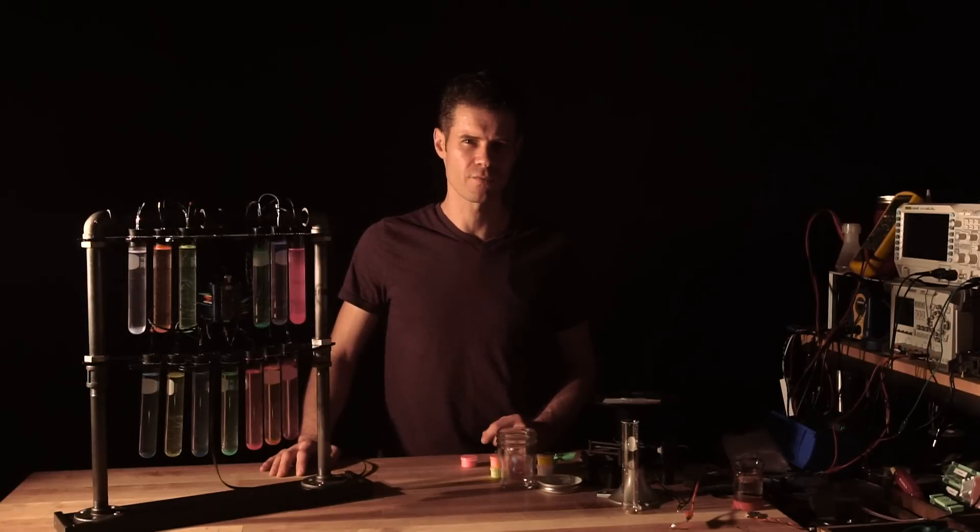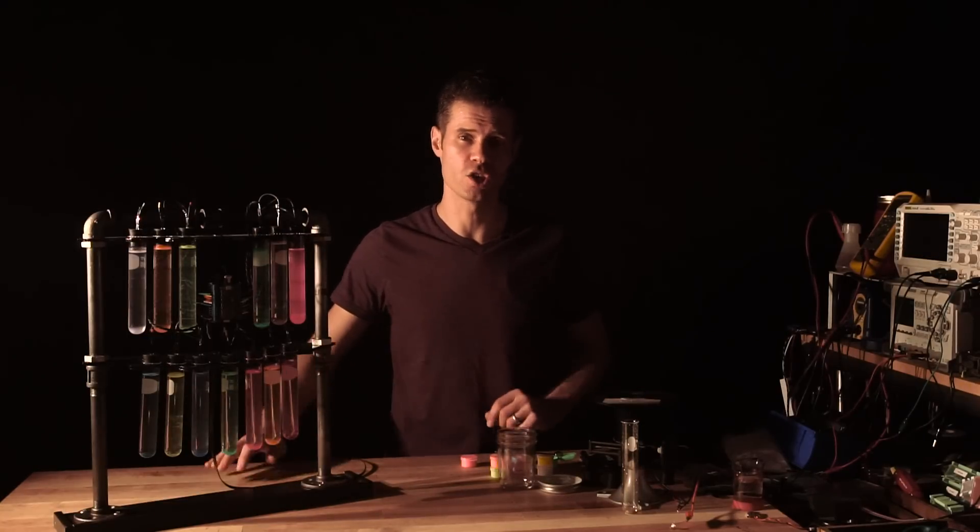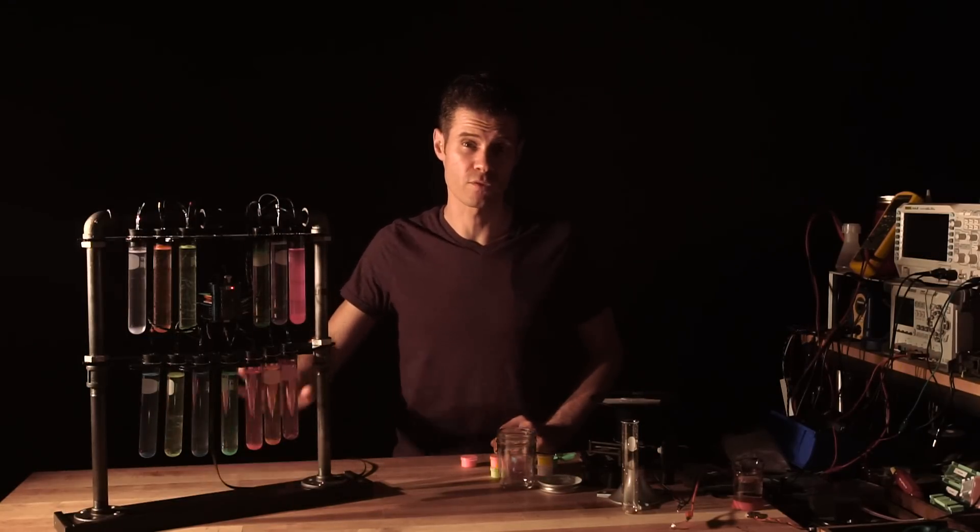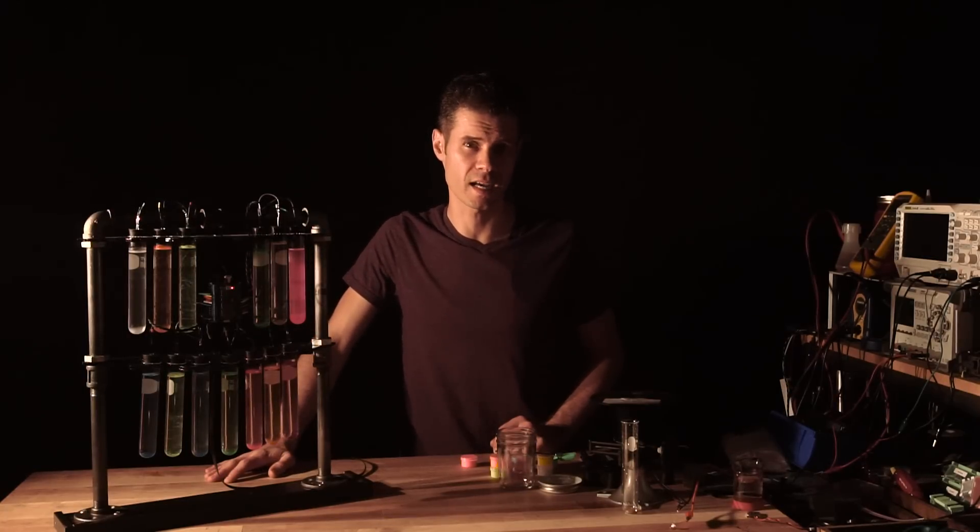I initially came up with the idea for this project by shining some UV light onto some tonic water. The quinine in the tonic water will fluoresce when you shine a UV light on it. Now if you want to get lots of crazy colors, you need to go online and get yourself some UV reactive pigments.